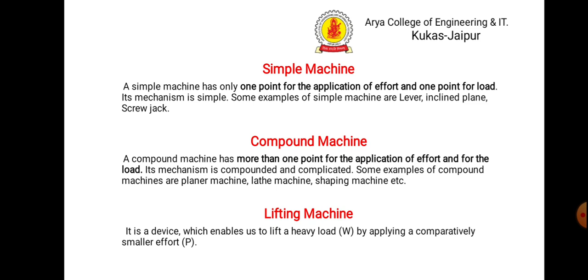But in a compound machine, for example a lathe machine, you can do many types of operations — such as facing operation or turning operation. For these, the way of input is different, so there is more than one point of application of effort and more than one load. Then lifting machine: it is a device which enables us to lift a heavy load by applying a comparatively smaller effort. Our focus in this lecture will be only on the lifting machine.